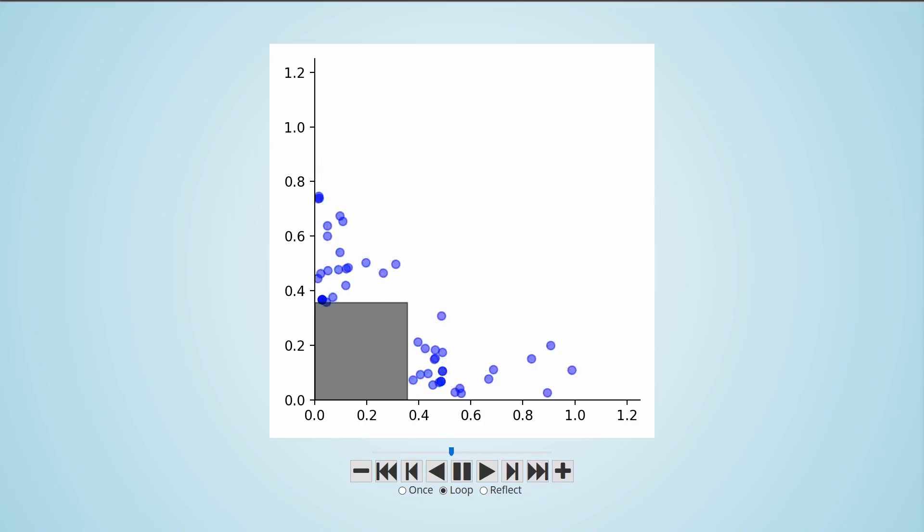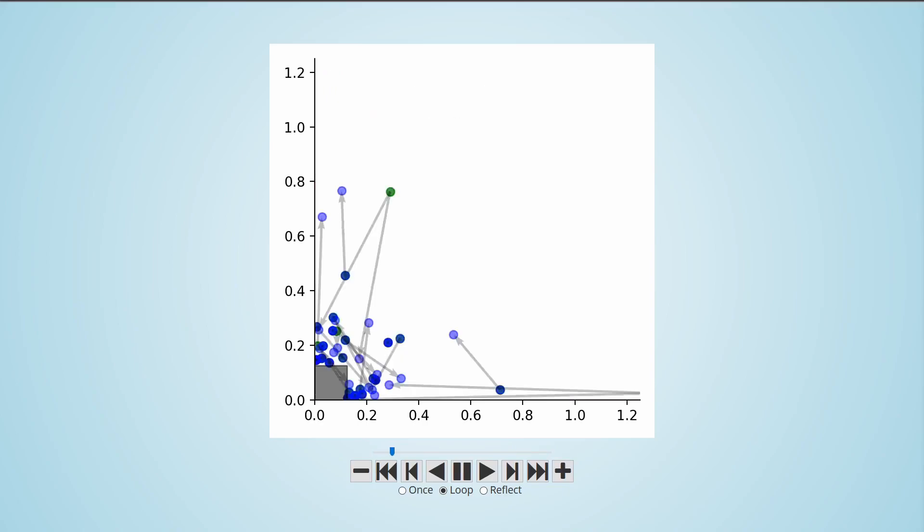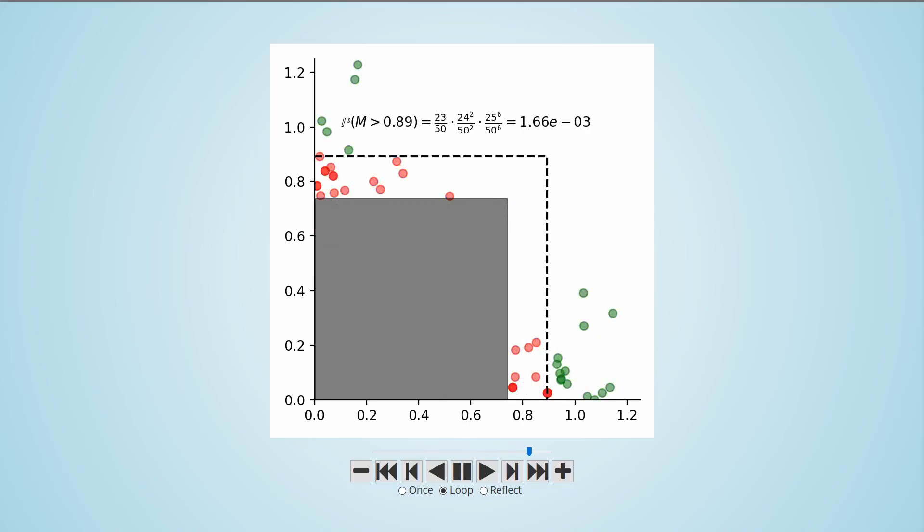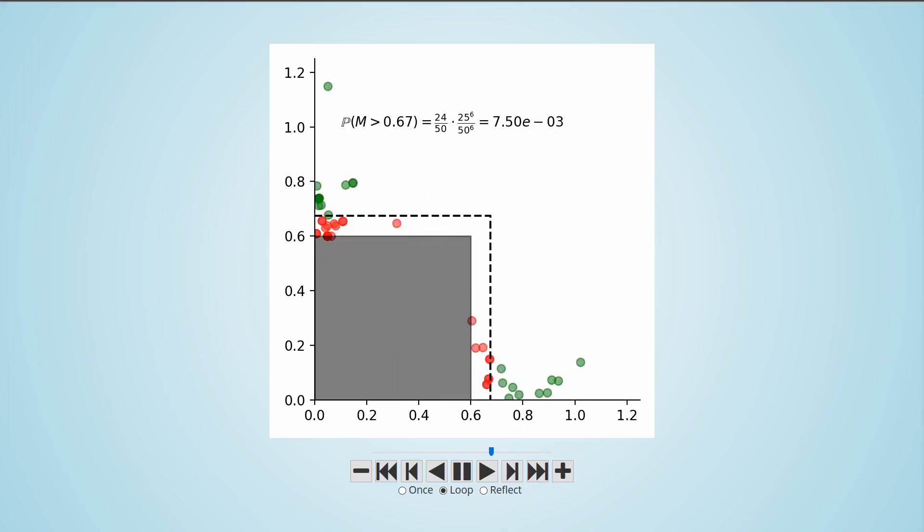This particular SMC algorithm is actually biased. It produces overestimates of the rare event probability on average, which for the sake of risk management is usually better than underestimating the rare event probability. The algorithm is consistent, meaning that it'd return the perfect answer if the number of points in the population was infinitely large.